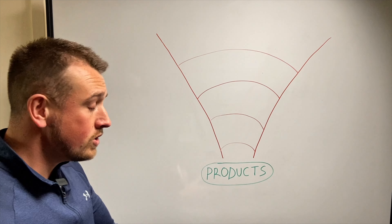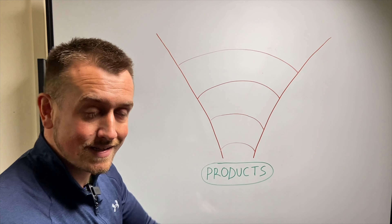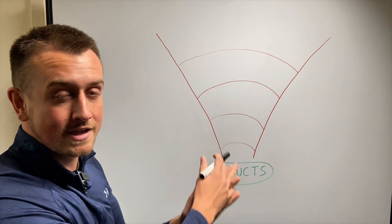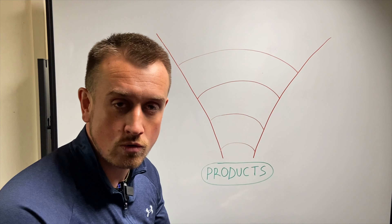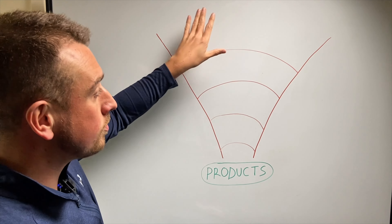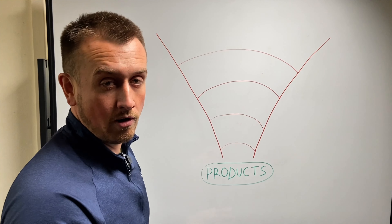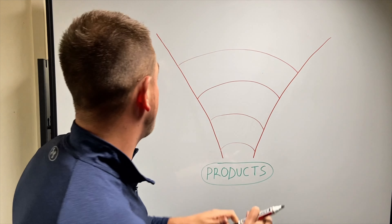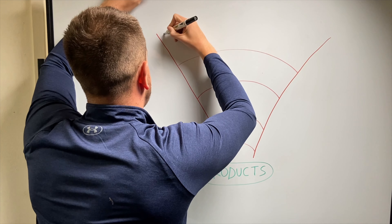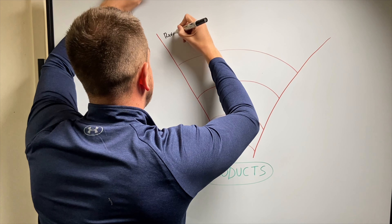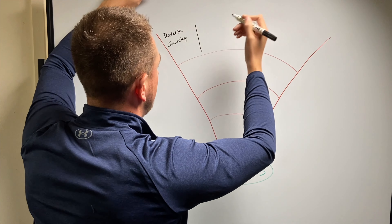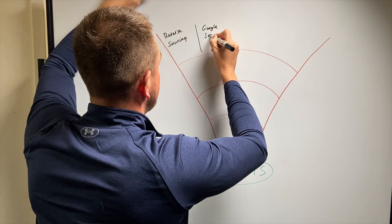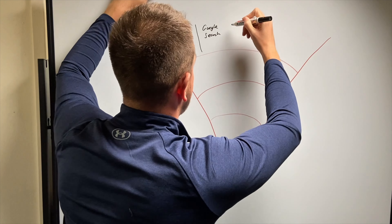When you're trying to find products for your Amazon business, obviously the first thing you're going to do is find suppliers. If you can't find any suppliers, obviously you can't find any products. So the top of this funnel is finding suppliers. I'm going to write a few different methods in here that you can use. We've got stuff like reverse sourcing, we've got Google search —